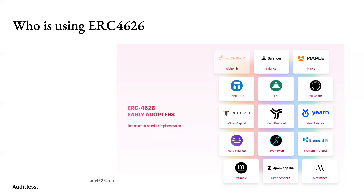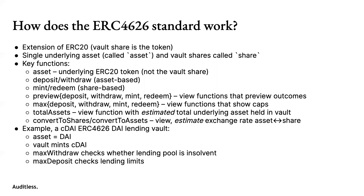How does it actually work? It is an extension of ERC-20. When we deposit into a vault we get some shares of the vault back — meaning we own two percent or five percent of the vault — and these shares are ERC-20 tokens. That's what I mean when I say ERC-4626 is an extension of ERC-20. The other thing specific to it is that there's a single underlying asset. Typically in a 4626 vault you'd deposit ETH, for example, and get some vault shares back. You can't have a vault where you need to deposit both WETH and USDC — that's just not expressible in the ERC-4626 standard.